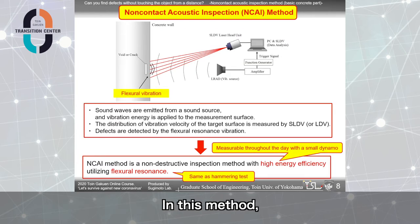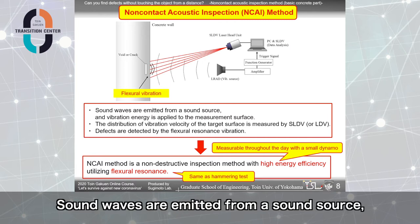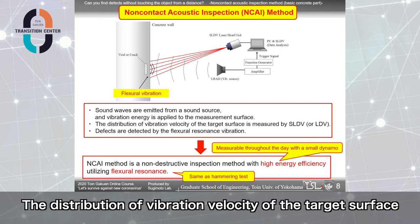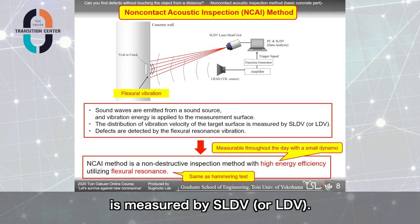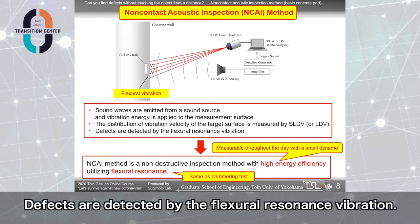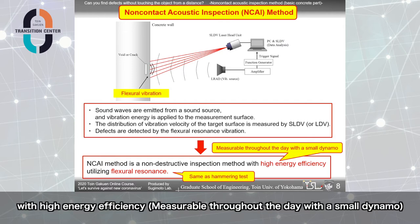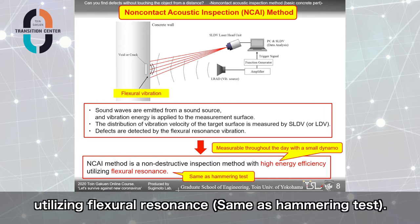In this method, sound waves are emitted from a sound source, and vibration energy is applied to the measurement surface. The distribution of vibration velocity of the target surface is measured by SLDV or LEDV. Defects are detected by the flexural resonance vibration. So, NCI method is a non-destructive inspection method with high energy efficiency measurable throughout the day with a small dynamo utilizing flexural resonance, same as hammering test.